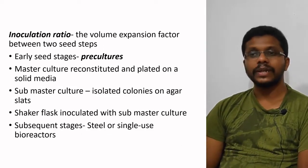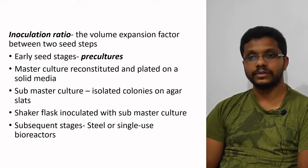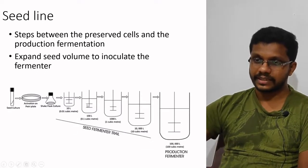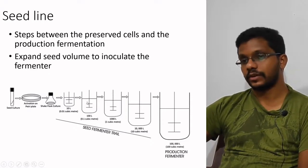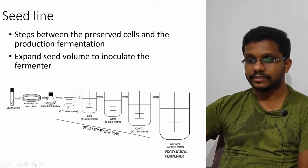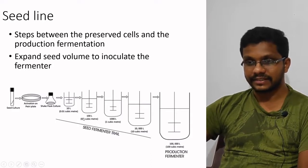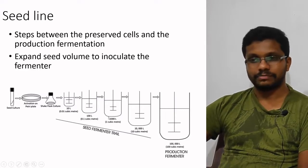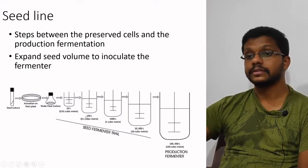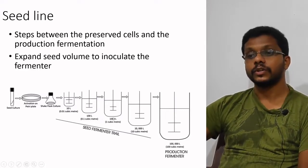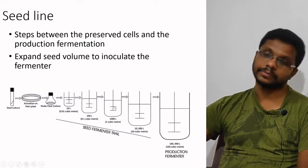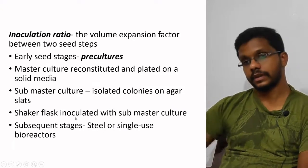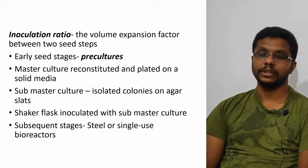The inoculation ratio is the volume expansion factor between two seed steps — how much volume is expanded from one stage to the next. For example, if we use 100 liters to inoculate a 1,000-liter stage, the ratio is 1 to 10. That is how we calculate the inoculation ratio between two steps of inoculum development.